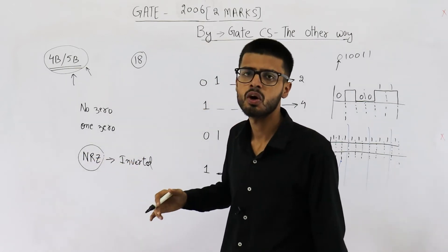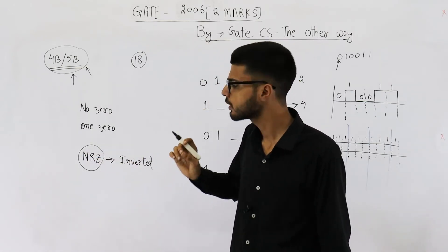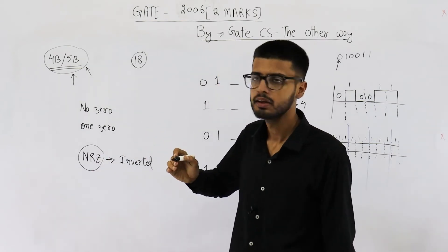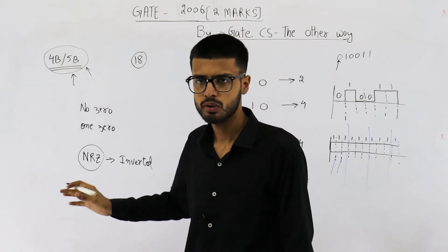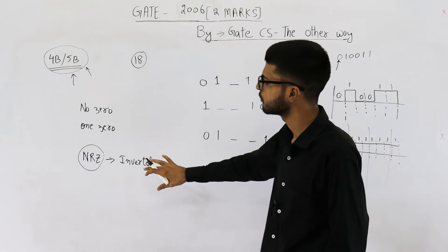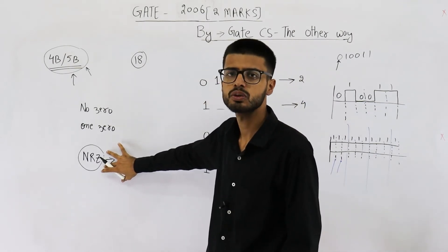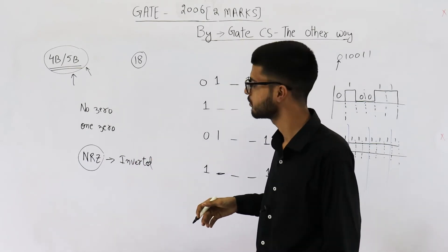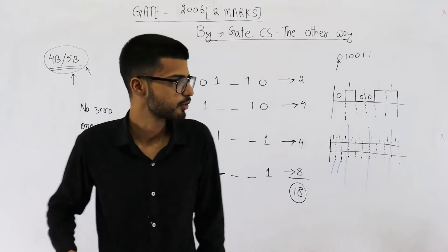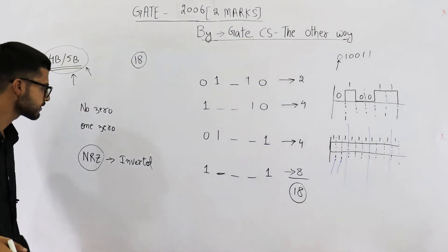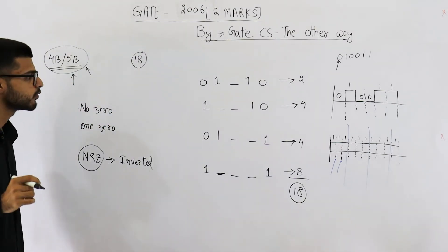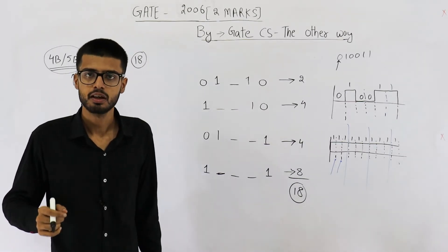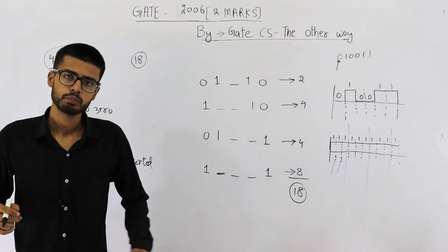NRZ stands for non-return to zero. It is a very simple scheme. In this scheme, whenever you want to transmit a 1, just change the value of the signal. Whenever you want to transmit a 0, keep the signal as it is.